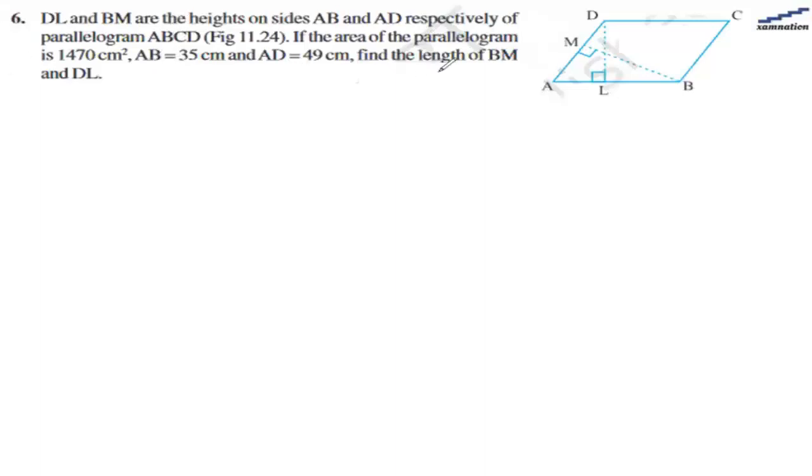In this question, we are given a parallelogram ABCD and we are told that DL and DM are the heights for the respective bases AB and ED respectively.